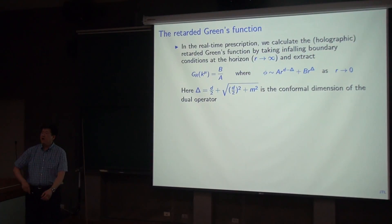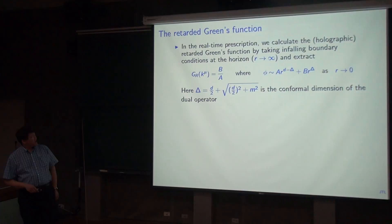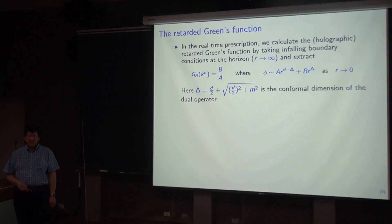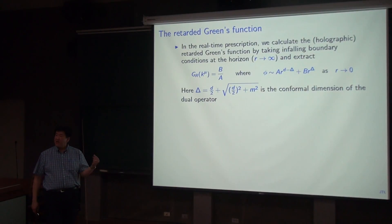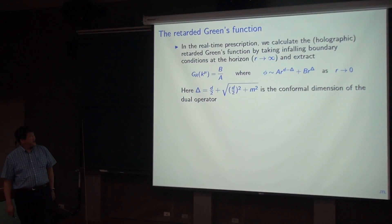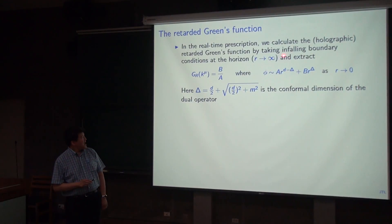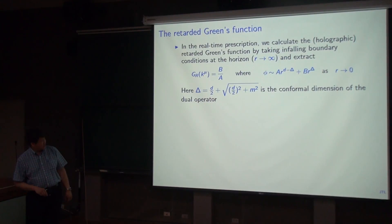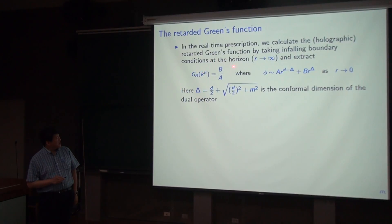In this real-time prescription, we're in Lorentzian signature, and the scalar field equation's special functions can actually oscillate. What we want to do is impose infalling boundary conditions at the ADS horizon, which brings it into the form of a Hankel function. Once you've imposed infalling boundary conditions at the horizon, your boundary behavior is fixed, with a non-normalizable mode and a normalizable mode. We can extract the boundary holographic Green's function as the normalizable mode over the non-normalizable mode — B over A.